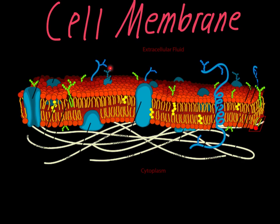Looking over here, these little circle-looking guys are carbohydrates. They're actually mounted to the proteins, so the protein acts almost like an anchor for them. The carbohydrates' function is to identify the cell. Another thing that we're looking at are cholesterols — these little guys wedged in between the two parts of the membrane. Those are there for added stability.